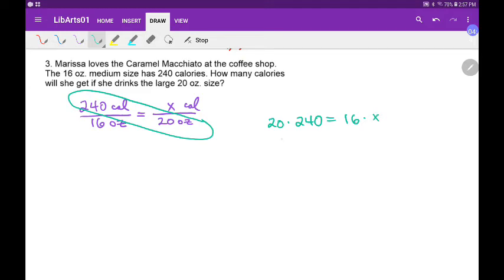And 20 times 240 is 48. 24 times 2 is 48, plus 2 zeros. 1 from the 20, 1 from the 240. Equals 16 times X. I'm going to divide both sides by 16. 16 into 48 is 3 with 2 zeros. So, my answer is 300 calories.